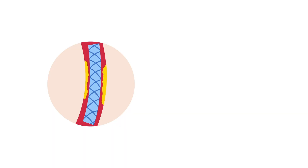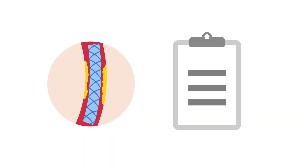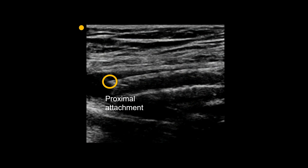Evaluation of a stent follows a standard protocol that is the same for a bypass graft. Measure a velocity just proximal to the proximal attachment, which is known as inflow and serves as a velocity reference. Next, take a velocity in the proximal attachment, as well as the proximal, mid, and distal portions of the stent. The distal attachment and outflow are the final measurements.